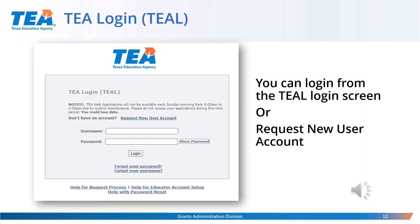Program staff and grant writers should know who the grantee official is so that once they have completed the information in the application, they can notify and follow up with the grantee official to ensure the application is submitted to TEA in a timely manner. Also, clean up and delete old access. Review staff roles periodically and delete roles that are no longer applicable to a person's position and duties.